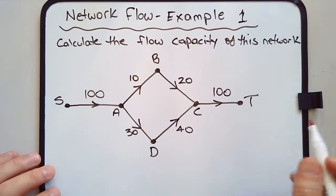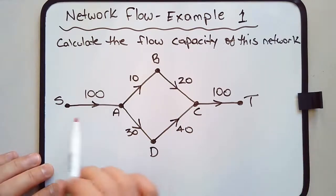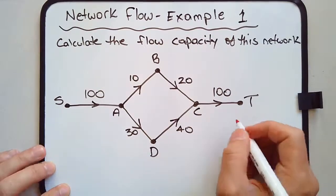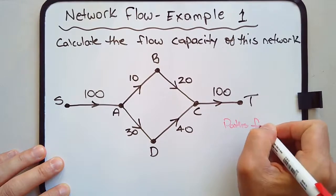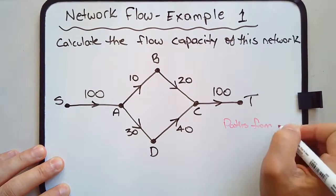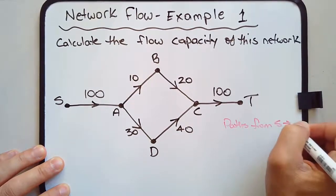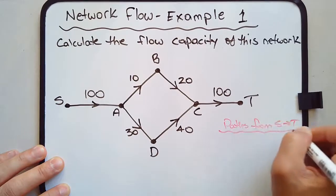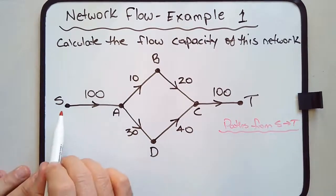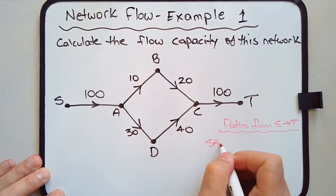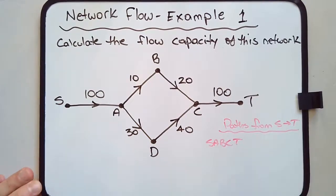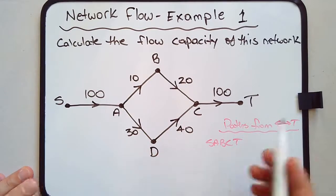The first thing we're going to do is determine the two ways that we can get from S to T. We can go via S, A, B, C, T. And the other path is S, A, D, C, T.